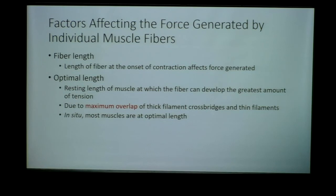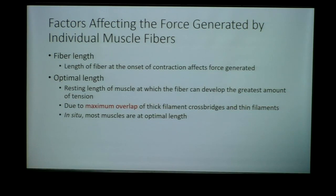The optimal length is that perfect length where we can have the maximum number of crossbridges. If we start crossbridge cycling with the sarcomere way stretched out, we're not going to generate as much force. Likewise, if the sarcomere is too contracted, we're not going to generate maximum force. The optimal length is that in-between length where we generate the most force because we have the most crossbridge overlap and cycling.